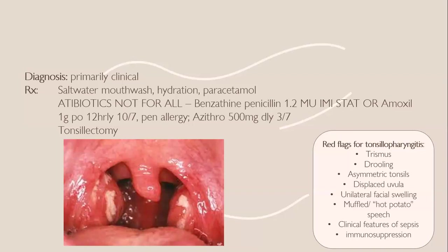Red flags indicating possible suppurative or invasive complications of tonsillitis — including peritonsillar abscess or retropharyngeal abscess — require urgent ENT referral, empiric IV antibiotics and steroids, and preparation for difficult airway management. Red flags include trismus, drooling, asymmetric tonsils, a displaced uvula, unilateral facial swelling, muffled or hot potato speech, and clinical features of sepsis and immunosuppression.